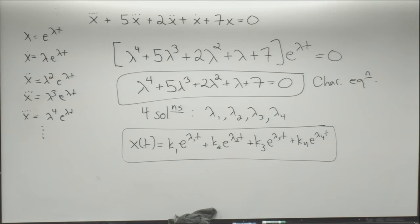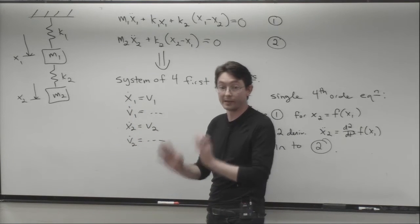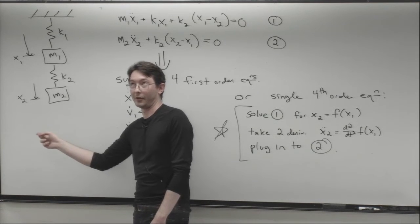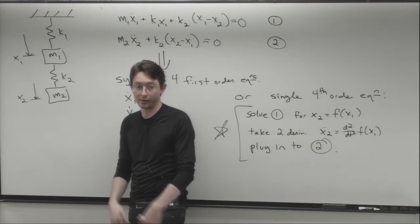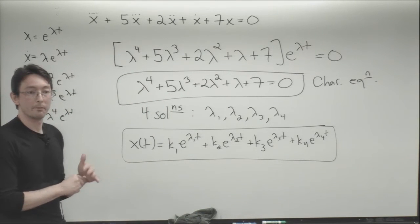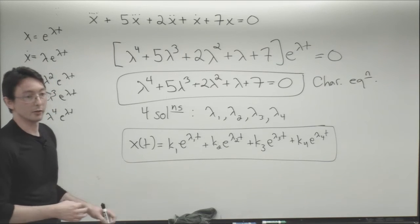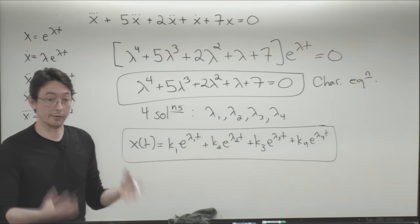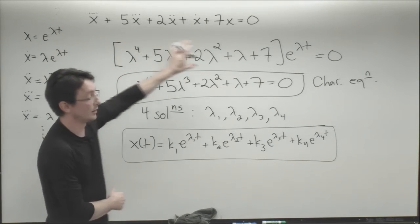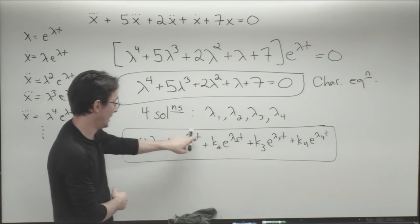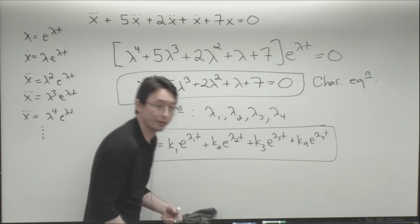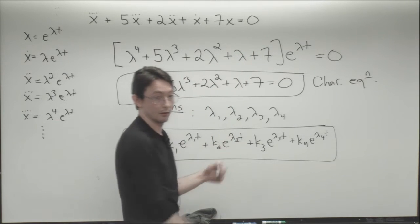For the double spring-mass system, reasonable initial conditions would be the initial position and velocity of both masses. If lambdas are complex — say λ = -1 + i — then I get an exponentially decaying envelope with oscillation. If they're positive real, I get exponential growth; if negative real, exponential decay. This is extremely general: any higher-order linear differential equation can be solved by assuming e^(λt), getting the characteristic equation, and solving for the lambdas.